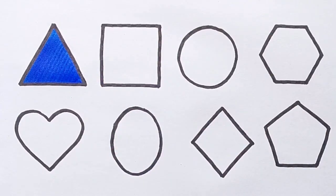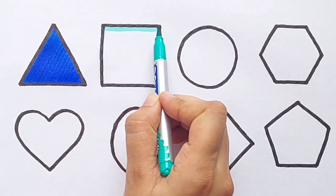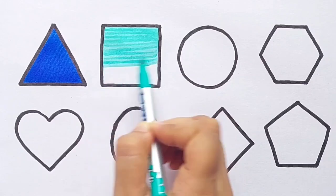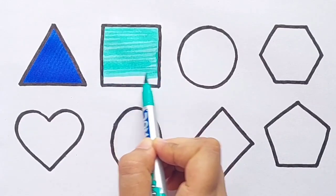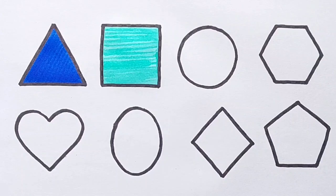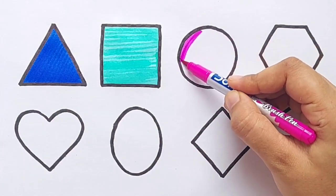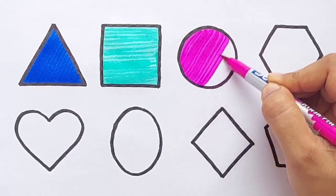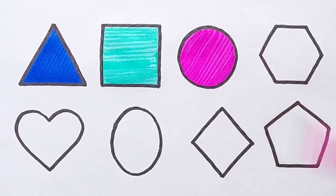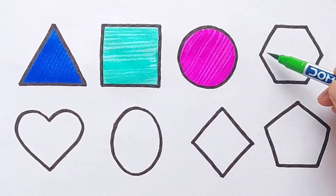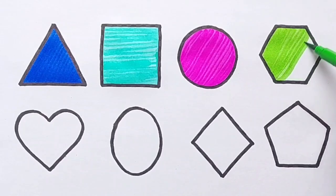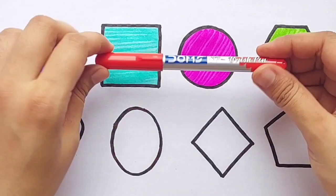Triangle - Sea Green Color. Square - Pink Color. Purple Color Circle. Light Green Color. Hexagon - Red Color.